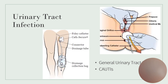CAUTIs — catheter-associated urinary tract infections — are the most common hospital-associated infection. Seventy to 80 percent of CAUTIs are attributed to indwelling urethral catheters per the Joint Commission. To prevent CAUTIs, use sterile technique when inserting the catheter, do catheter care using soap and water every shift, and perform hand washing. With perineal care for the catheter, start at the urethra and clean outward.